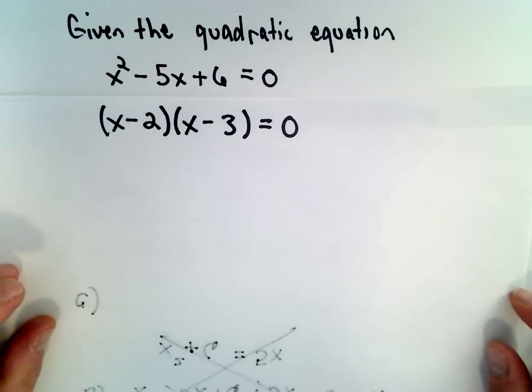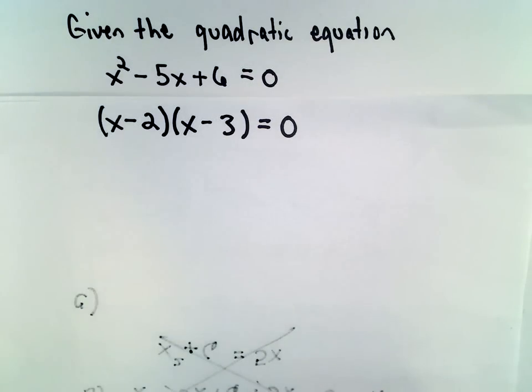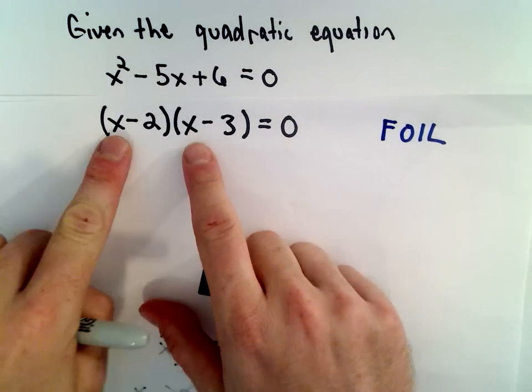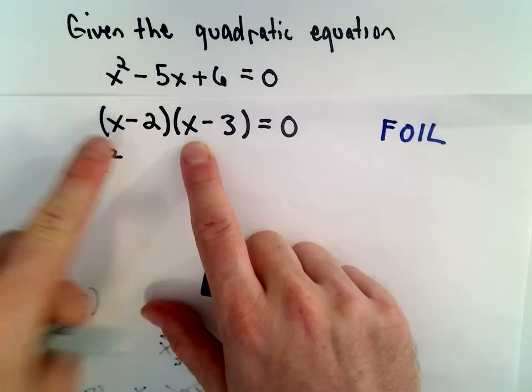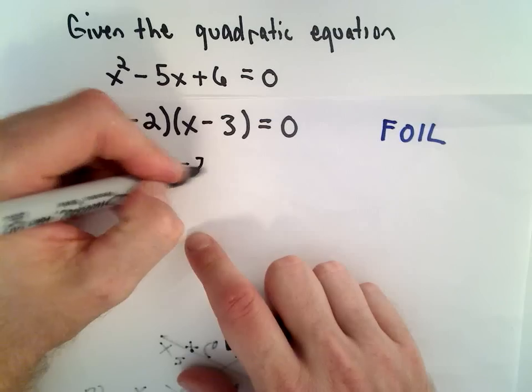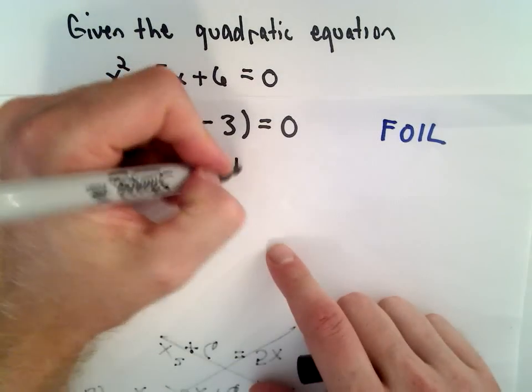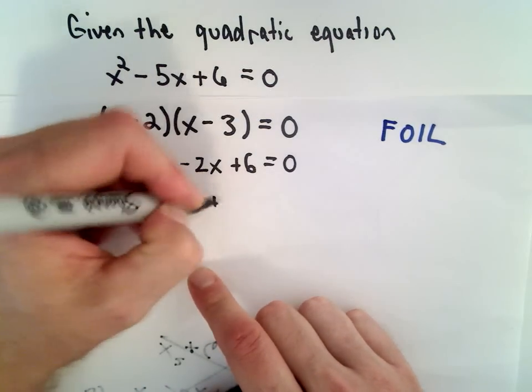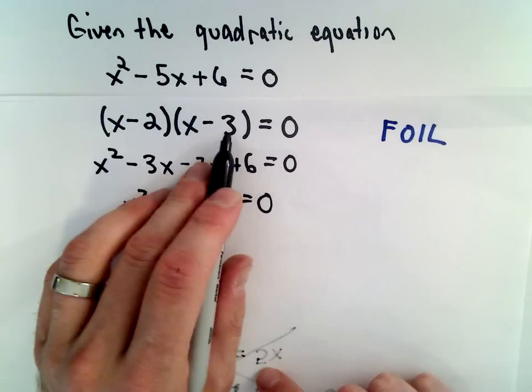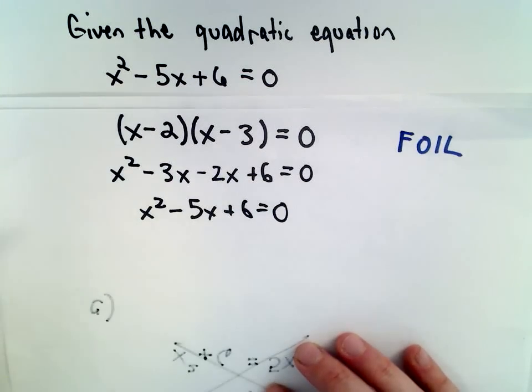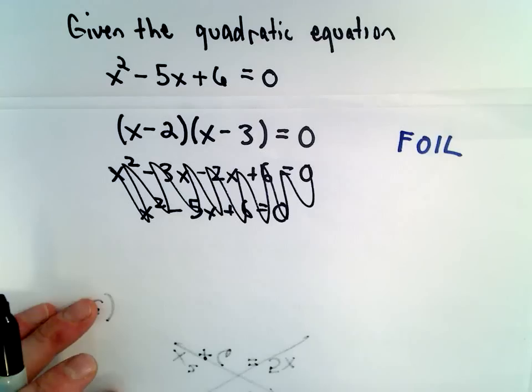This to me looks to be the correct factorization. Notice if we multiplied it out, if we used, say for example, the FOIL method, first outer inner last, we would multiply x multiplied by x, that would give us x squared. x multiplied by negative 3 would be negative 3x. Negative 2 multiplied by x would be negative 2x. Negative 2 multiplied by negative 3 would be positive 6. So the negative 3x and the negative 2x would be negative 5x. The first thing I want to point out is this is a correct factorization.